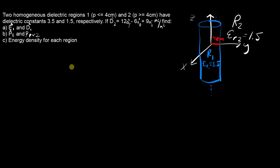For this question, you've got two dielectric regions separated by a boundary at rho equals four centimeters. Because they don't say anything for phi and z, you can assume this is true for all phi and z. So R1 is an infinite cylinder that goes all the way up and down the z-axis, and R2 is a dielectric that covers everywhere outside of it.